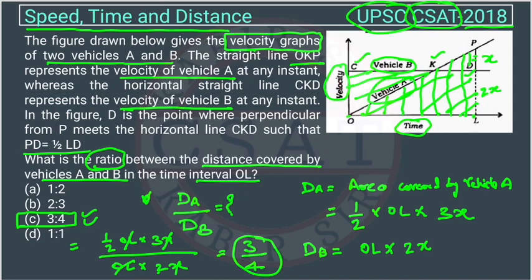The concept here is that we should know the distance will be equal to the area covered in the velocity graph. If we know this, it is just a 10-second question — you can solve it in 10 seconds. This is a very good question asked by UPSC. If you still have any issues, you can comment, call us, or WhatsApp us and I will explain personally.